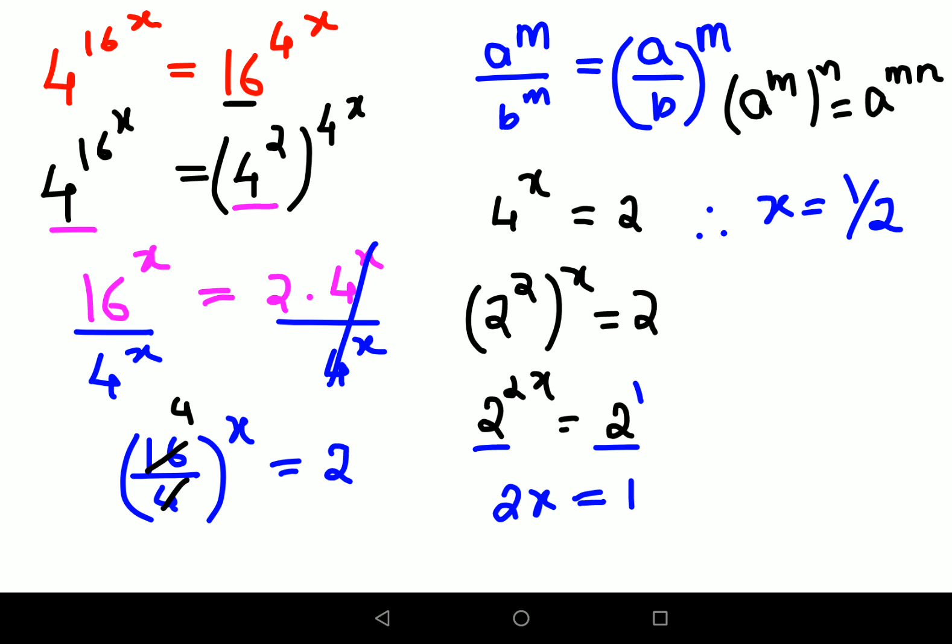Now let's verify by plugging into the original question. We have 4^(16^(1/2)). Now 1/2 is square root, so 4^(√16) = 4^4 = 256. Similarly, 16^(4^(1/2)) = 16^(√4) = 16^2 = 256.